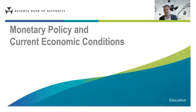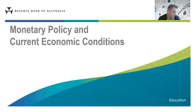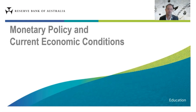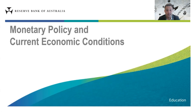Thanks Jackie. Hi everyone, thanks very much for joining us today. My name is John Bolter. I'm an economist in the Economic Analysis Department of the Reserve Bank of Australia, in a section called Domestic Activity and Trade, where we look at developments in the real side of the economy — consumption, imports, exports, dwelling investment, business investment and so on. Before this I was in our China office in Beijing, monitoring developments in the Chinese economy.